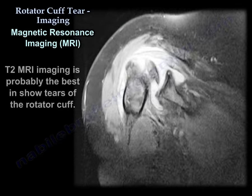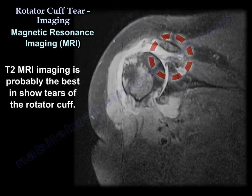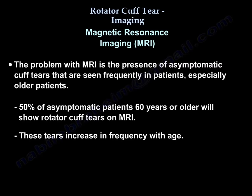When it comes to the MRI, T2 is probably the best sequence for showing tears. One problem with MRI is the presence of asymptomatic cuff tears seen frequently in patients, especially older individuals. About 50% of asymptomatic patients aged 60 years or older will show tears on MRI, and these tears increase in frequency with age.